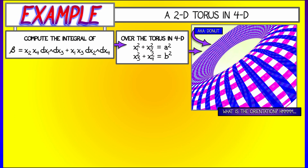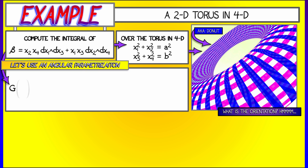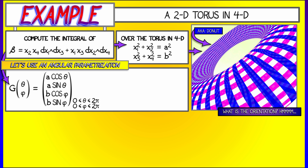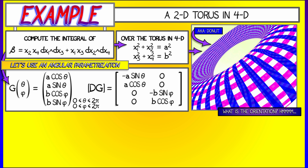Let's fix the orientation via a parametrization — an angular parametrization. Let G have parameters theta and phi, parametrizing those two circles in the plane. Let G(θ, φ) = (A cosθ, A sinθ, B cosφ, B sinφ), as theta and phi go from 0 to 2π. That gives us the x1, x2, x3, and x4 coordinates. The derivative has two columns: the partial with respect to theta is (−A sinθ, A cosθ, 0, 0), and the partial with respect to phi is (0, 0, −B sinφ, B cosφ).